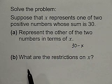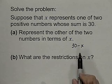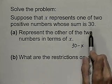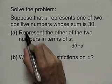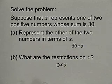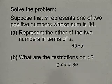Secondly, we want to write down what are the restrictions on x. Well, x must be a number that added to another number's sum is 30, and x has to be positive. The first thing to note is that x is positive and x itself must be less than 30.